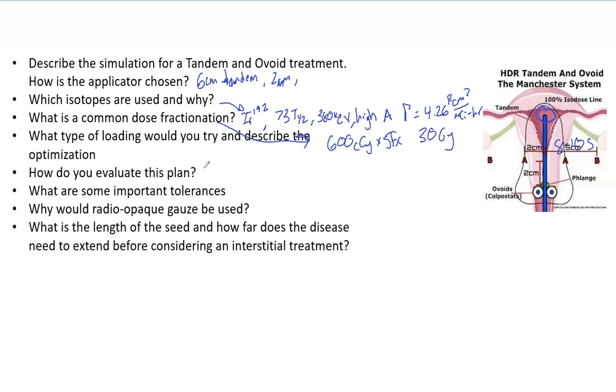Some important tolerances - I get a lot of these from the ABS, the American Brachytherapy Society. You want 2 cc of the bladder less than 90 Gray. Same thing, 2 cc of rectum you want less than 75 Gray. Bladder is more radio-resistant so it can take a bit more dose than the rectum can.